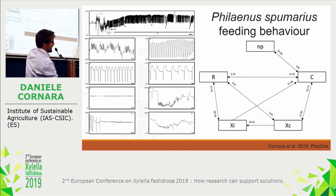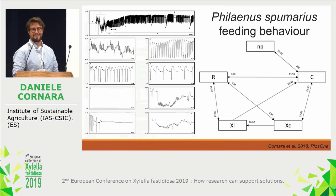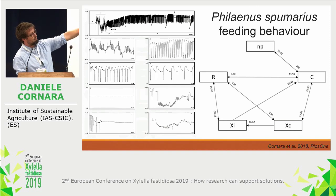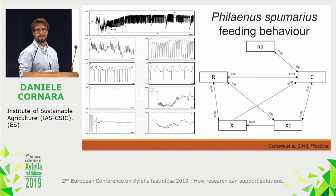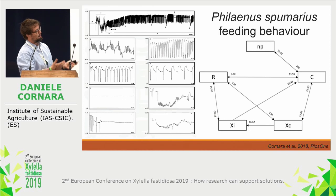First is NP, non-probing — a flat line with stylets out of the plant. Then Philaenus starts to penetrate the plant, shown as waveform C. Then Philaenus reaches a xylem vessel and there is the xylem contact behavior, during which Philaenus may sense if the host is suitable. If suitable, Philaenus starts xylem ingestion, alternating with R — resting — a flat line with stylets inside the plant. During xylem activity, Philaenus also performs an N interruption, whose biological meaning is still unknown.